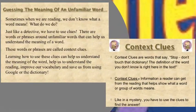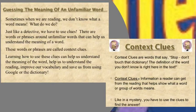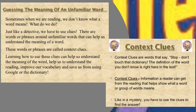So what are context clues? Context clues are hints, clues, or information around a sentence or around a passage that help me understand what a word means — a word that I don't know. These clues help me understand what that word means. There are words or phrases around unfamiliar words that can help us understand the meaning. Context comes from the word text, and clues are hints. Learning how to use these clues can help us understand the meaning of the word, help us understand the reading, improve our vocabulary, and save us from using Google or the dictionary.